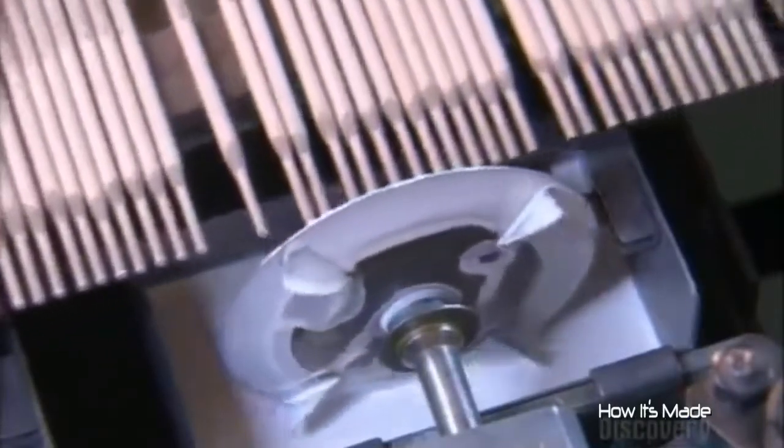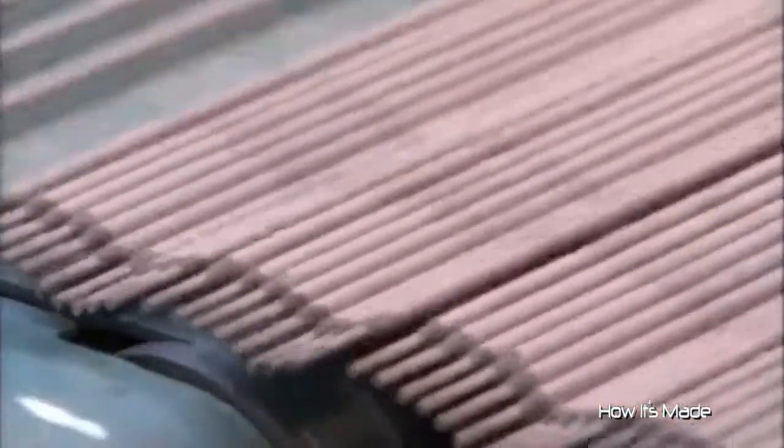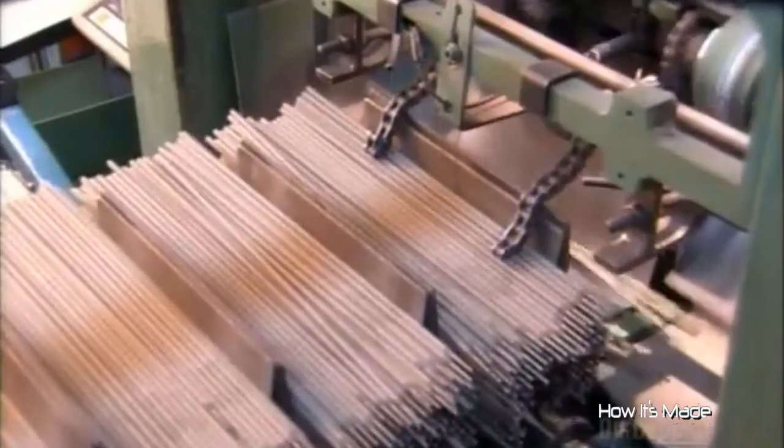From there, it's off to packaging. An optical scanner counts the electrodes. Then a stacking machine separates them into three and a half to five kilogram bundles.